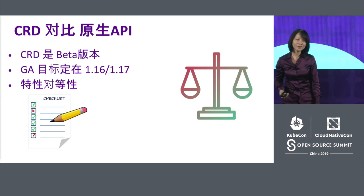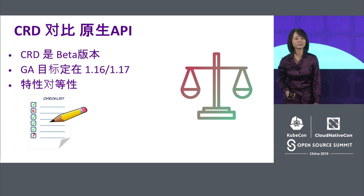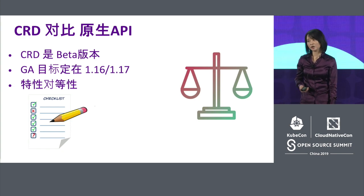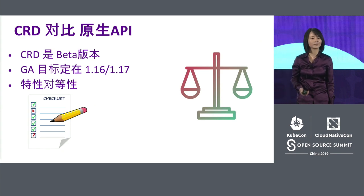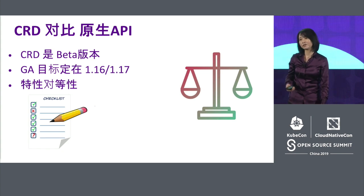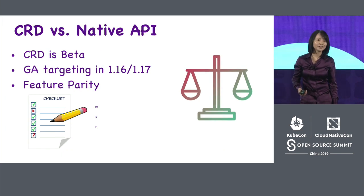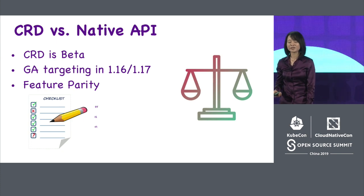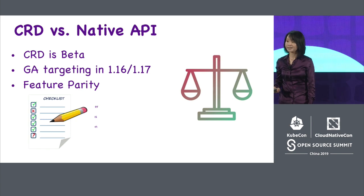You can do a kubectl create to create a snapshot API object, and kubectl delete to delete it. The snapshot controller works behind the scenes to make sure the user's request is taken care of. CRD is still beta — the plan is to bring it to GA in the next couple of releases. CRD already has many features available in native APIs, for example defaulting, validation, OpenAPI v3 schema definition, and so on. There is an effort to bridge the gap between the two, and CRDs are becoming more and more like native APIs.